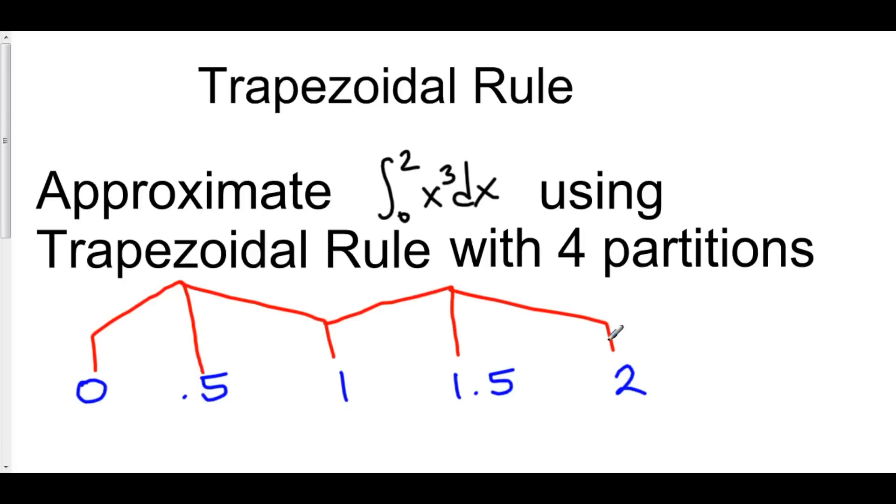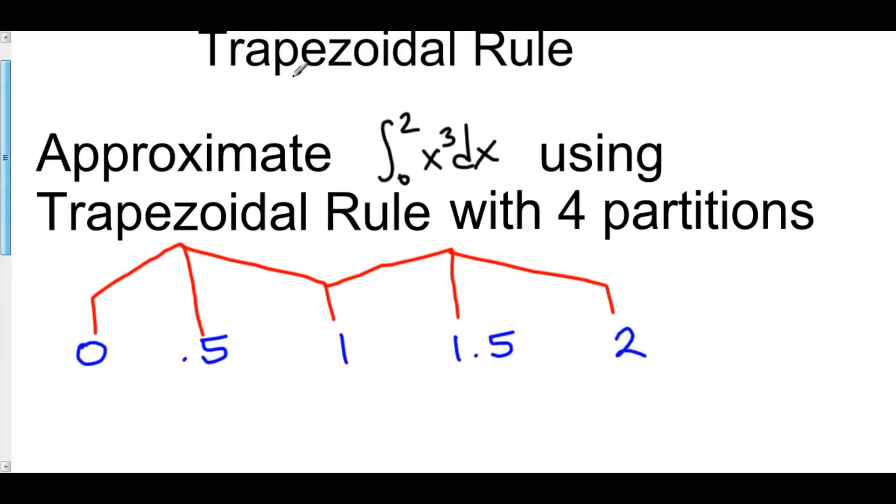So using the formula, we can find the area under all of these trapezoids. My h here is 0.5, and by the formula we have h, which is 0.5, divided by 2.